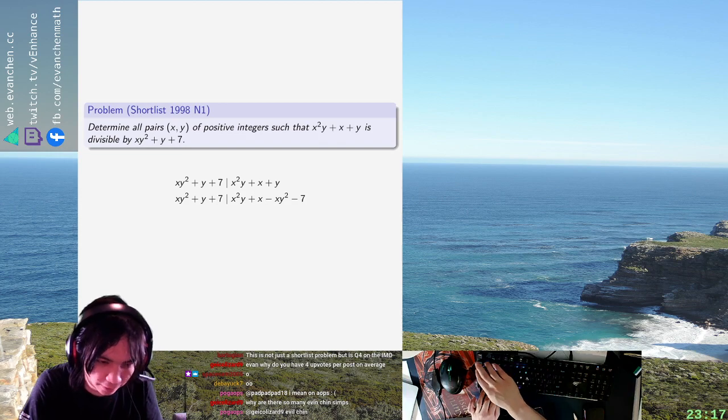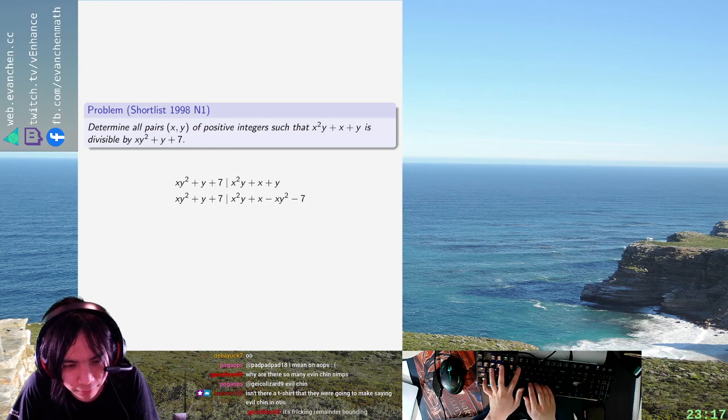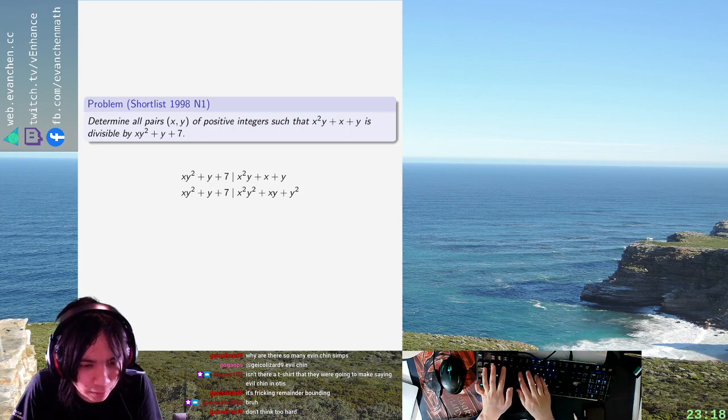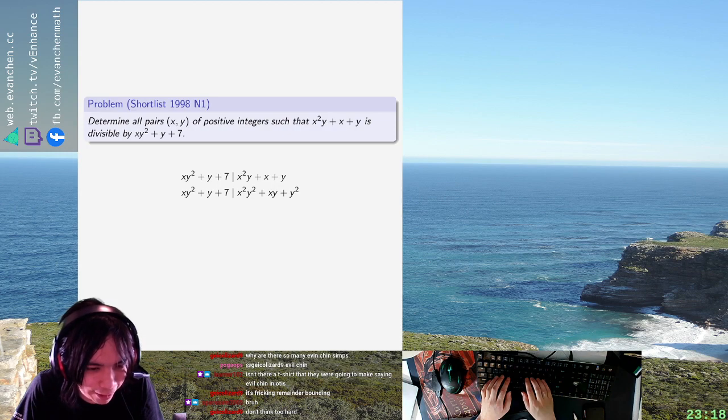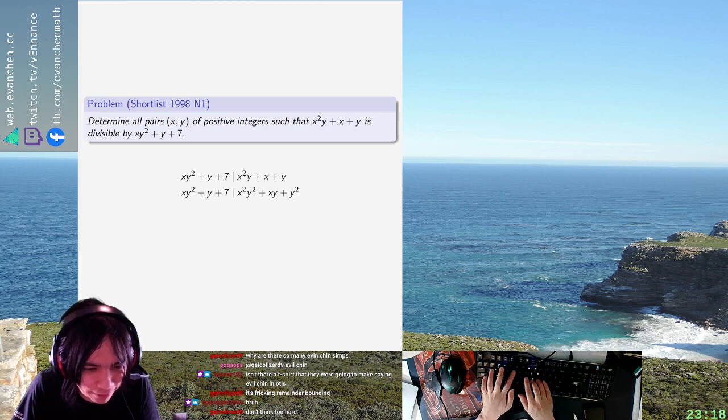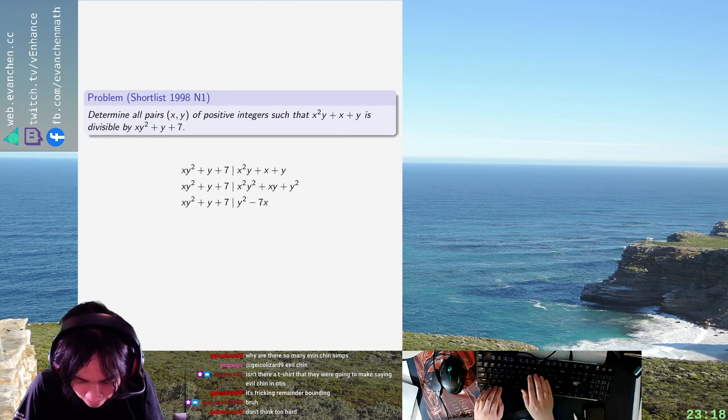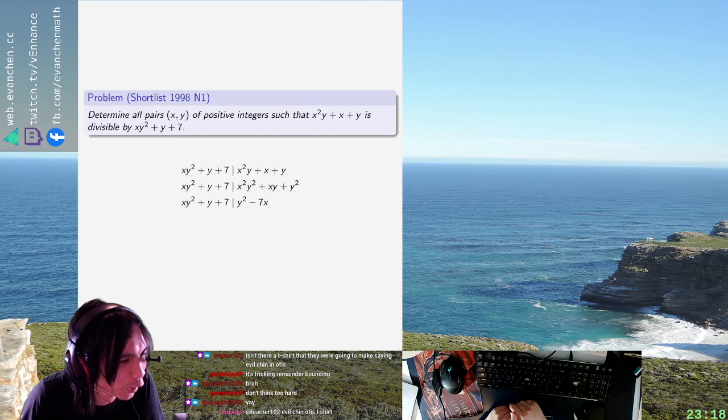Alright, alright, we're doing it. We're doing it. xy plus y squared... And we just subtract once. Oh wow. Wow, that cancelled really well. Uh-oh. So now I just get y squared minus 7x. That's probably too small.